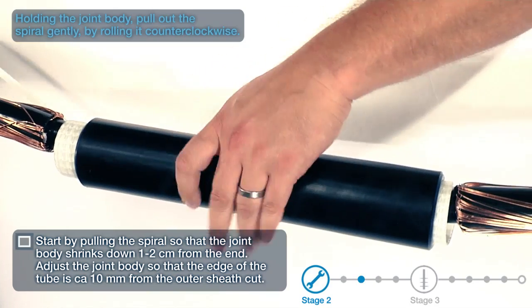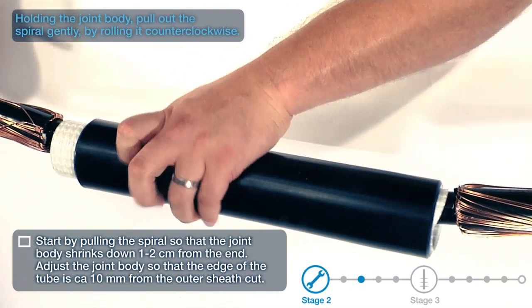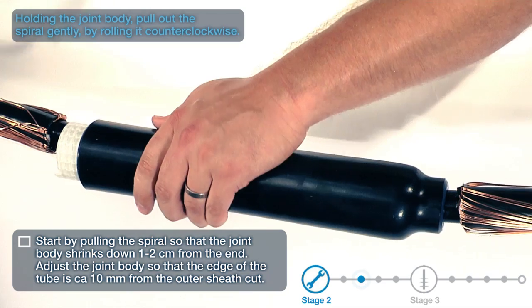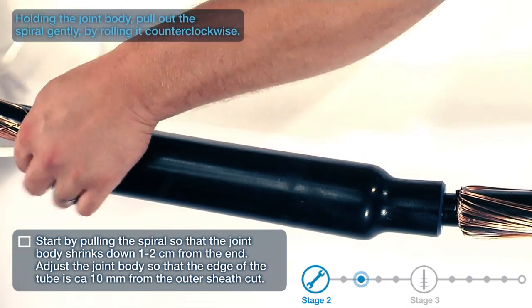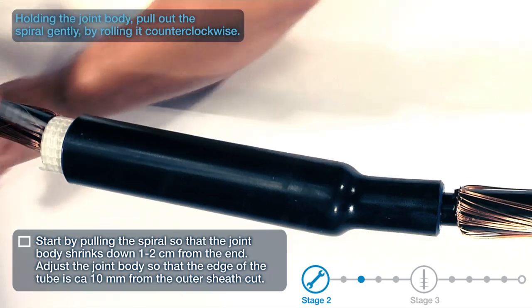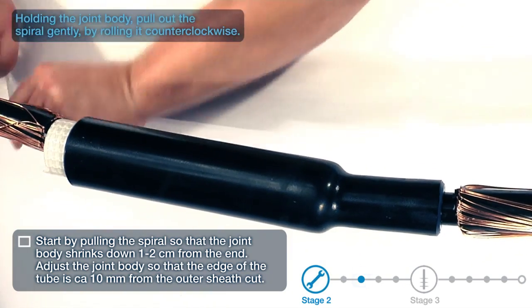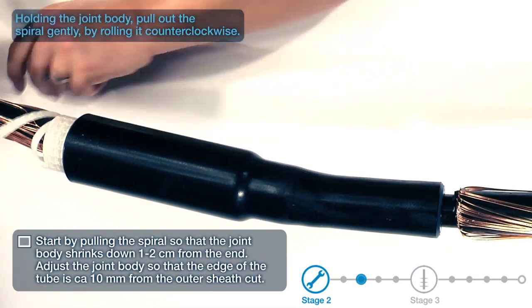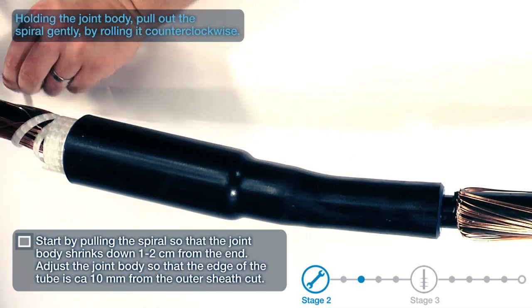Start by pulling the spiral so that the joint body shrinks down 1 to 2 centimeters from the end. Adjust the joint body so that the edge of the tube is CA 10 millimeters from the outer sheath cut. Holding the joint body, pull out the spiral gently by rolling it counterclockwise.